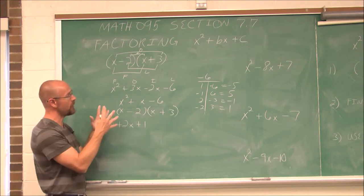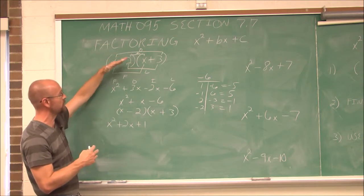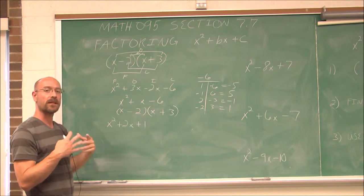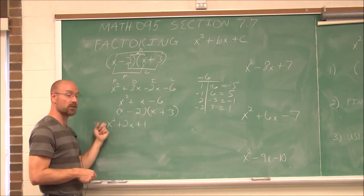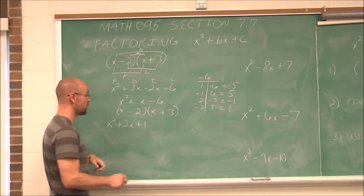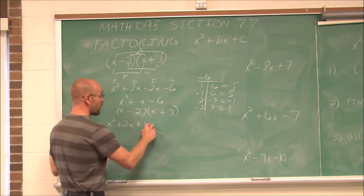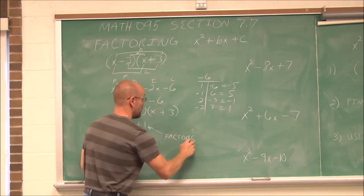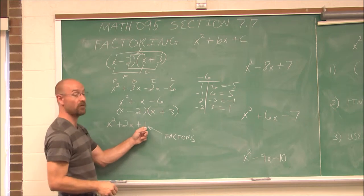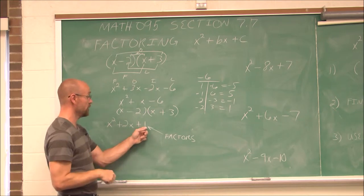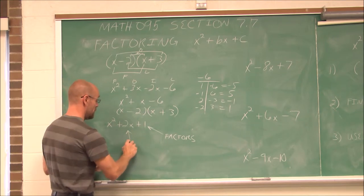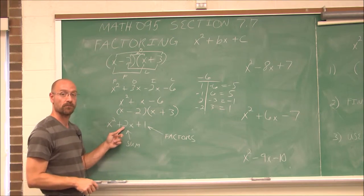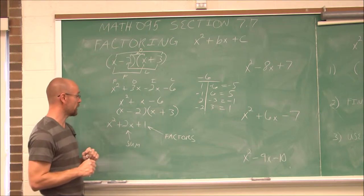That may have seemed complex, but the key point is: when this leading coefficient is 1, all we really have to look at is what are the factors of our c value — our constant — that sum to the b coefficient. That's all we really have to look at.